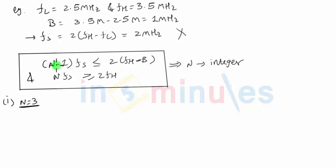If n is 3, the first statement becomes 3 minus 1 times fs, that will be 2 fs, less than equal to twice of fh. In our example, fh is 3.5 minus bandwidth is nothing but 1 megahertz. So this is the first statement and according to that, 2 will cancel out, fs should be less than equal to 2.5 megahertz.